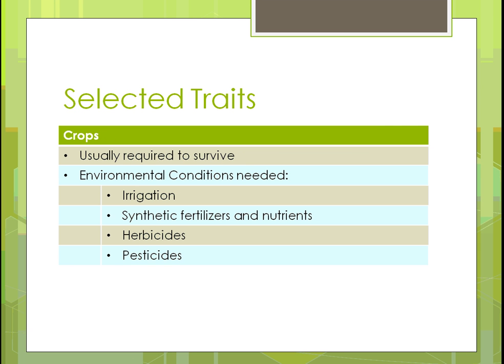In order for crops to survive today, they need specific irrigation conditions, especially vegetables grown in warmer climates like Florida or California. They require synthetic fertilizers and nutrients added manually. And because the ability to fight diseases and insects has been bred out, farmers must apply herbicides to control weeds and pesticides to control pests, disease, and insects.